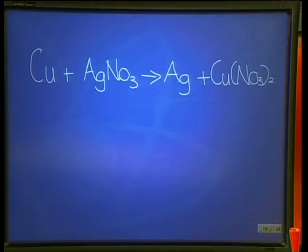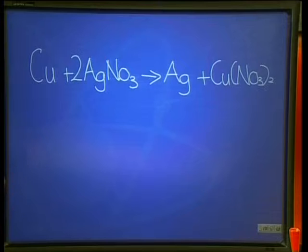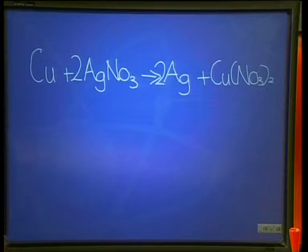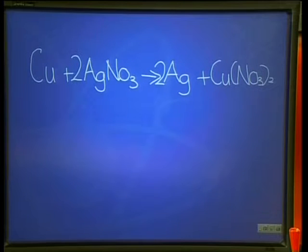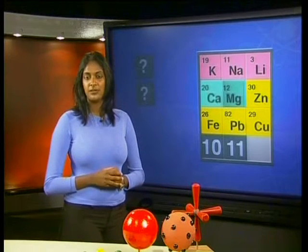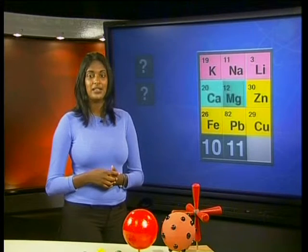To balance this equation, we have to add two silver nitrate particles to the left of the equation and two silver atoms on the right. This gives us Cu + 2AgNO3 → 2Ag + Cu(NO3)2. This displacement reaction also shows that silver is less reactive than copper, and we can slot it into our reactivity series.